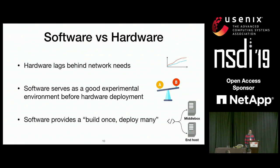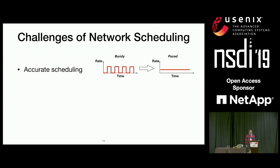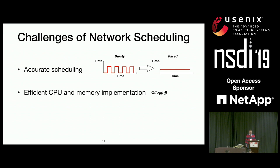Software — or even hardware — scheduling is challenging for multiple reasons. First, accurate scheduling: for instance, in rate limiting we want to avoid bursty behavior and prefer a more paced approach, but this leads to higher CPU utilization. Second, keeping CPU and memory overhead low is a challenge, as overhead of software schedulers is typically O(log n) where n is the number of packets or flows scheduled, making overhead a function of load. We'd rather have it be a function of the policy — constant regardless of load.